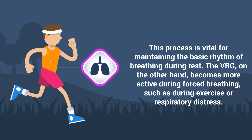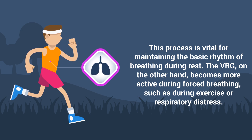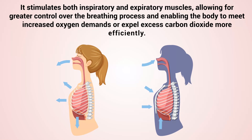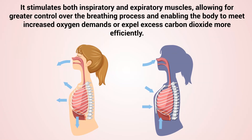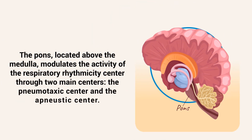The VRG, on the other hand, becomes more active during forced breathing, such as during exercise or respiratory distress. It stimulates both inspiratory and expiratory muscles, allowing for greater control over the breathing process and enabling the body to meet increased oxygen demands or expel excess carbon dioxide more efficiently.